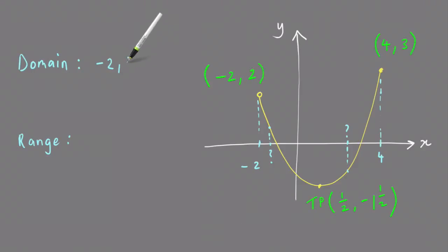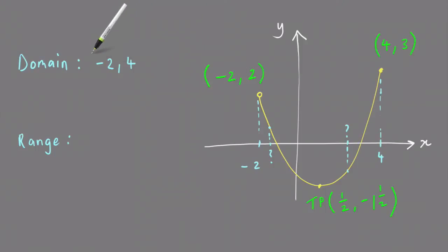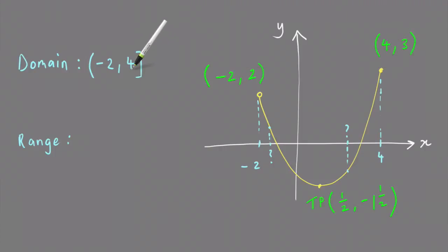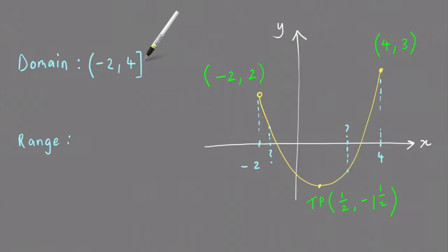So the domain is from minus 2 to 4. Because this is an open circle, that means you're not including minus 2, so you have a round bracket. Because 4 is included, you have a square bracket. So the set of x values that belong to the graph are from minus 2 non-inclusive to 4 inclusive.